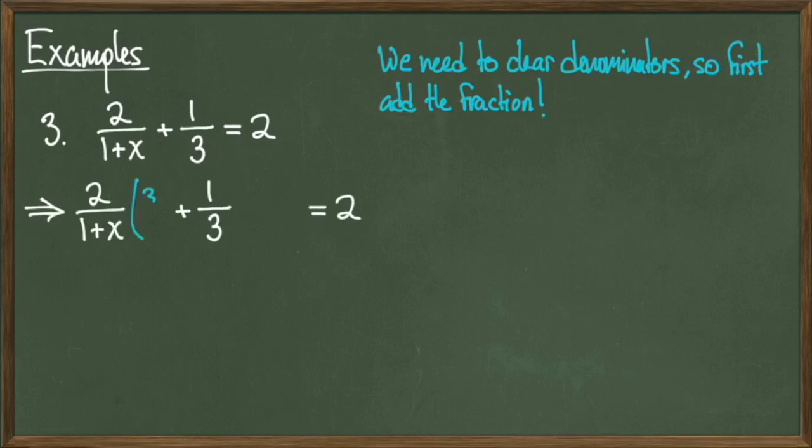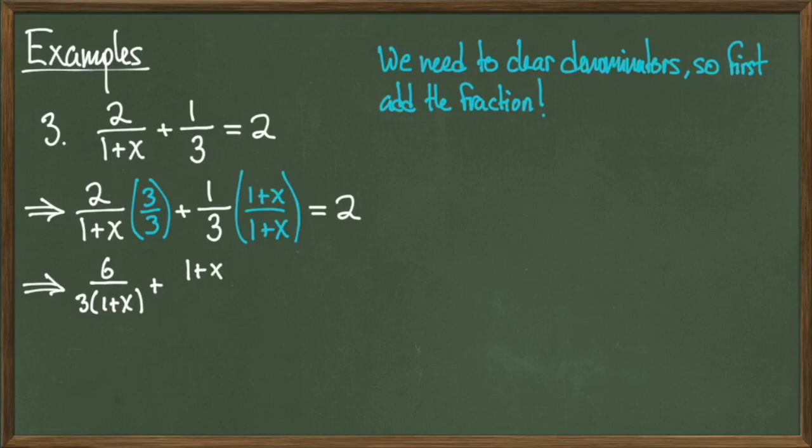Notice that if I multiply 2 over 1 plus x by 3 over 3, and 1 third by x plus 1 over x plus 1, this will simplify in the following way. Now that I have common denominators, I can simply add the fractions on the left-hand side together like so. So now I have the revised equation 7x over 3 times the quantity 1 plus x equals 2. So the right-hand side didn't change any. The only thing I've done is simplify the left-hand side.